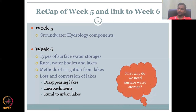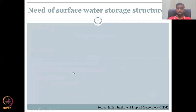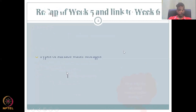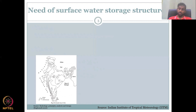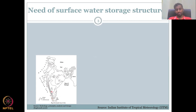Let's dive into week six. First, why do we need surface water storage? We talked about groundwater storage, but there are specific reasons why surface water storage is also needed. Looking at the image showing rainfall variation: rainfall is not the same across India, and even within a village or district, you can have a high-rainfall zone next to a rainfall shadow zone.